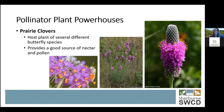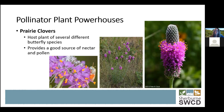Moving into summer, prairie clovers are a really great source of pollen and nectar for a wide variety of bees and butterflies, and also a larval host for several different butterfly species. They are in the legume family — the pea family — and can acquire nitrogen from the atmosphere and make it available in the soil, benefiting all of the plants around them. They're kind of self-fertilizing, so it's a good addition to your landscape to help increase soil health.